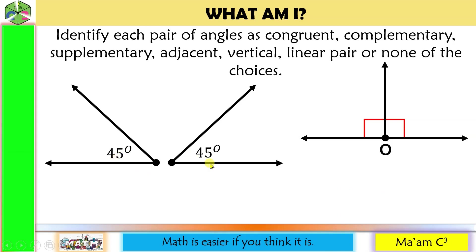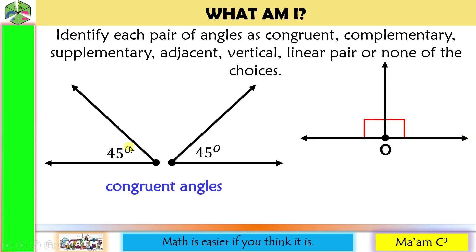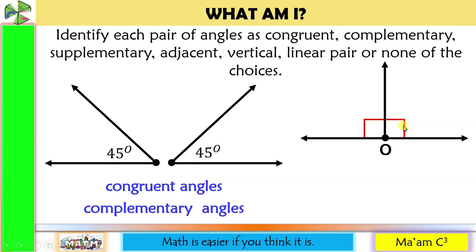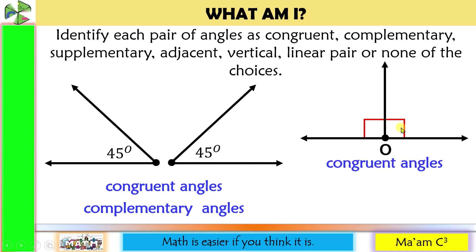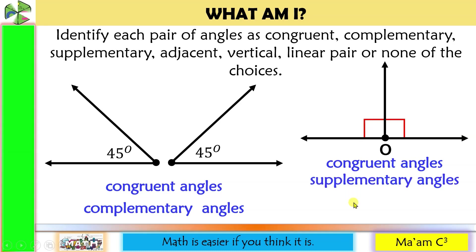The next one: both angles measure 45 degrees, so they are congruent angles. And since 45 plus 45 equals 90, we can also say that they are complementary angles. On this figure, this angle measures 90 degrees and this one is also 90 degrees. Therefore, they are congruent angles. And since 90 plus 90 equals 180, they are also supplementary angles.